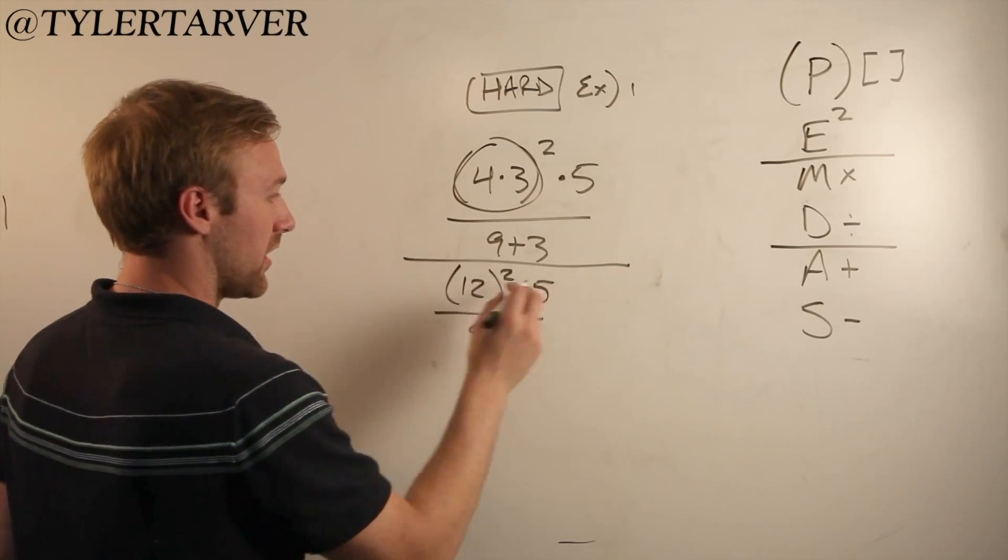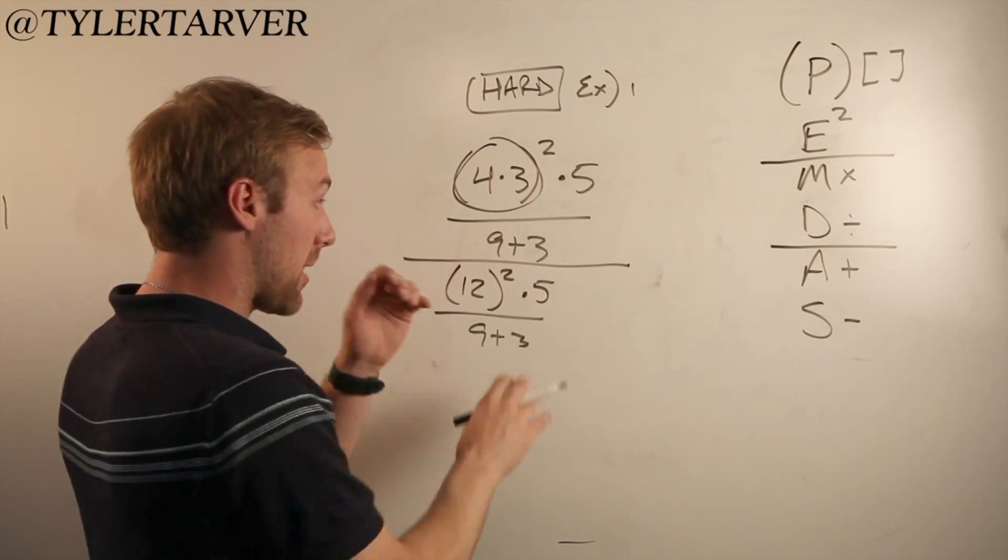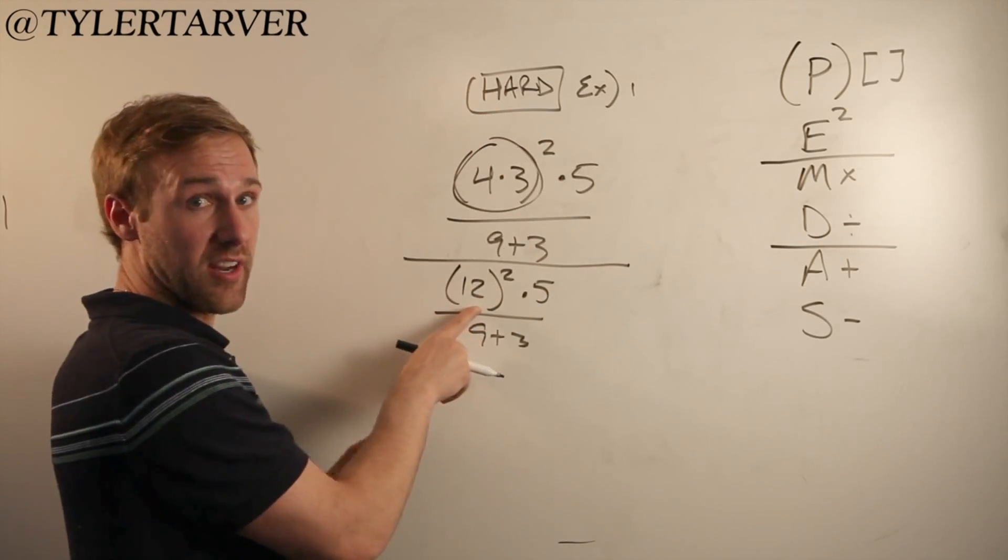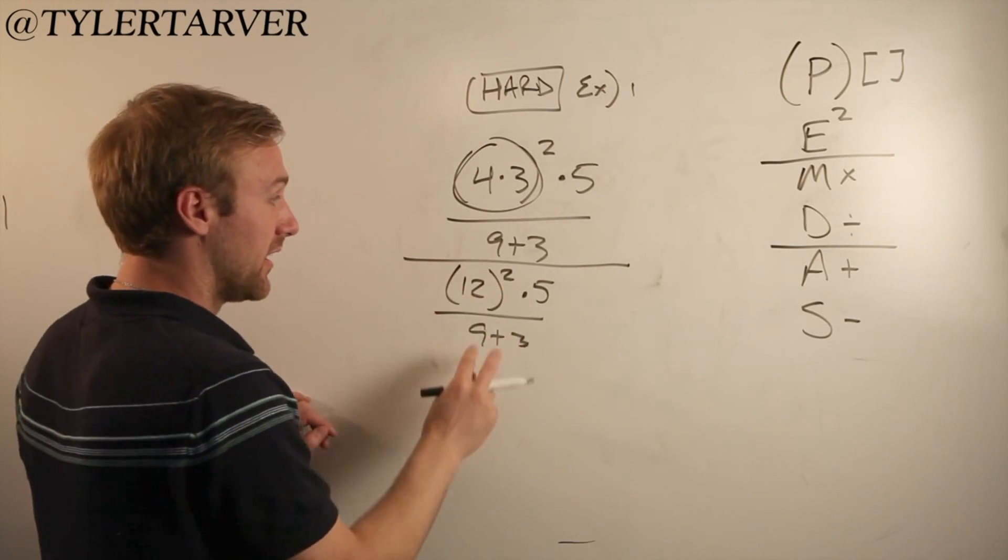So bring everything else down the way it was. This is my new problem now. I don't care about this anymore. This is now my problem. Parentheses, boom, nothing I can do about it. Exponent, boom, there's something I can do about that, so it'd be 144 times five over nine plus three.